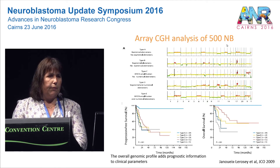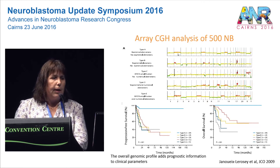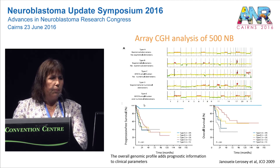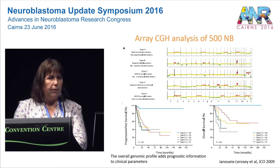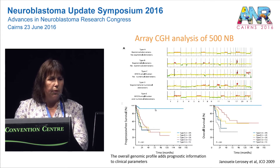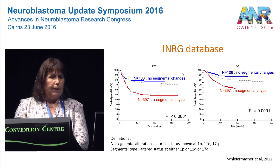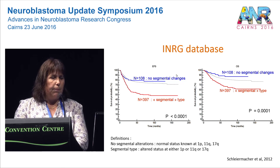aCGH in neuroblastoma has been performed in several patient series, and a general classification can improve prognostic information. The most commonly used classification distinguishes numerical chromosome alterations — meaning gains and losses only of whole chromosomes — versus segmental chromosome alterations, with chromosome arms gained or lost. A clear difference in terms of progression-free and overall survival can be seen between these different genomic groups. This has also been demonstrated in other patient series, including the large INRG database, where a big difference is seen between patients with no versus segmental chromosome alterations.